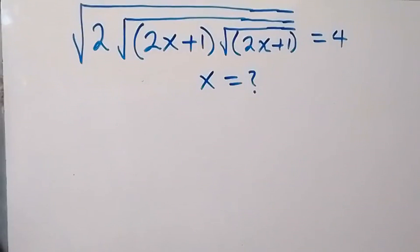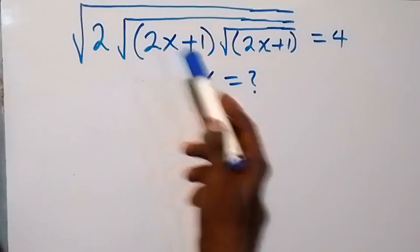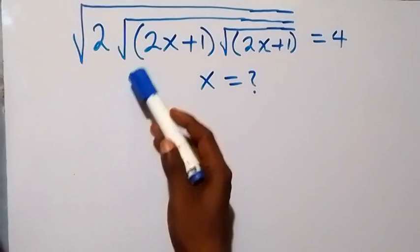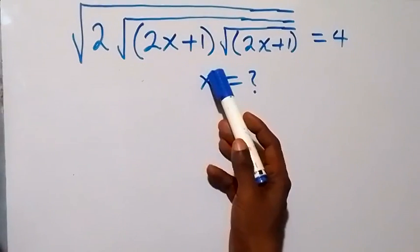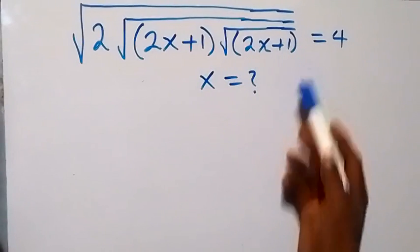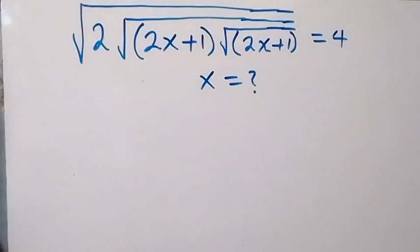Hello, you are welcome. How to solve this nice math problem involving roots. We have: square root of 2, inside that we have square root of 2x plus 1, and also square root of 2x plus 1, equals to 4.